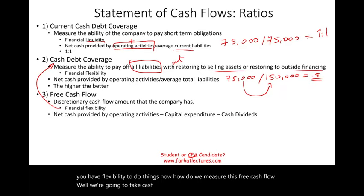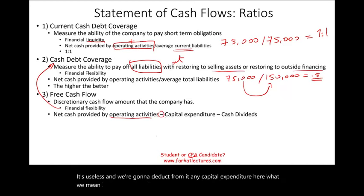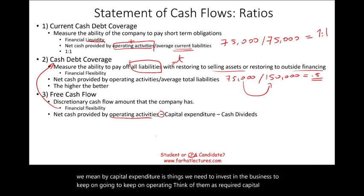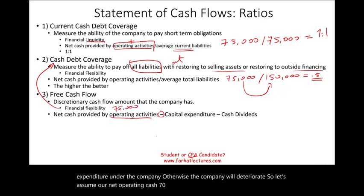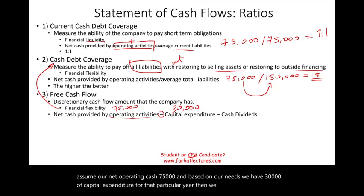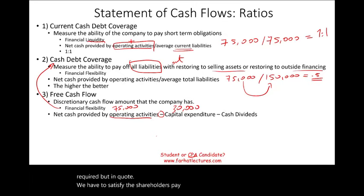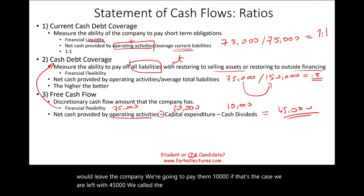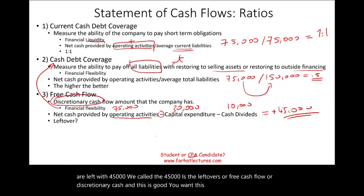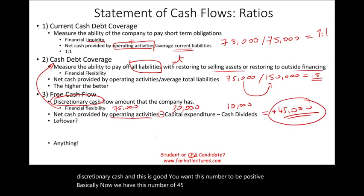To compute free cash flow, we take cash from operating activities — hopefully positive — and deduct any capital expenditure required to keep the business operating. For example, if net operating cash is $75,000 and required capital expenditure is $30,000, and we pay $10,000 in dividends to satisfy shareholders, we are left with $45,000. That $45,000 is the free cash flow — the discretionary cash.